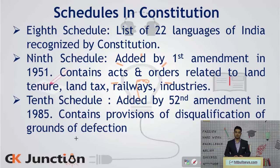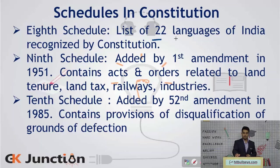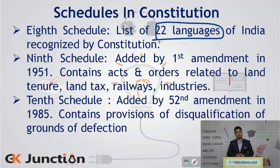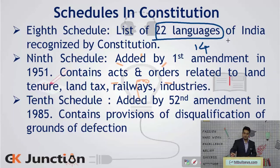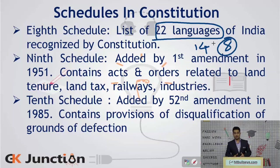The eighth schedule deals with the scheduled languages, which currently number 22. Initially there were 14 languages but with subsequent amendments in 1967, 1992 and 2003, eight new languages were added, bringing the current number to 22.